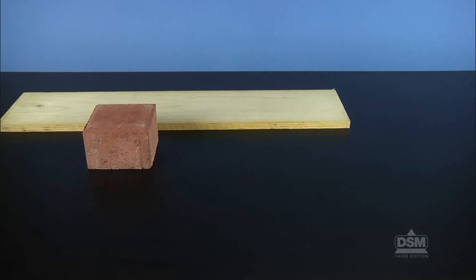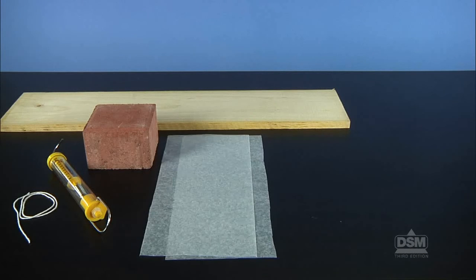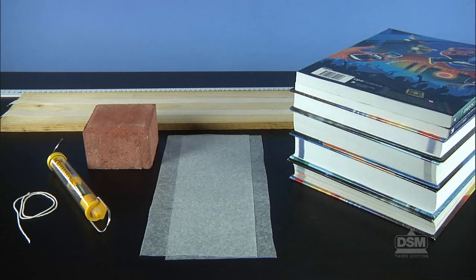Each team of four students will need a brick half, a wooden board, a spring scale, a piece of string, two pieces of wax paper, a few long strips of masking tape, a metric ruler, and five or six books, which will be used to elevate one end of the board.